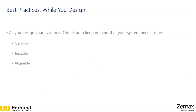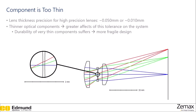While you're designing, consider that you want your product to be buildable, testable, and alignable. Optic Studio will allow you to design a really nice looking system that is highly impractical. Watch out for very thin components — lens thickness precision for high precision lenses is on the order of 0.05 millimeters, and very thin optical components will be more affected by this tolerance. Additionally, the durability of thin components is poor, so your design will be more fragile.